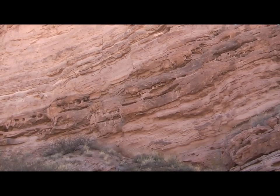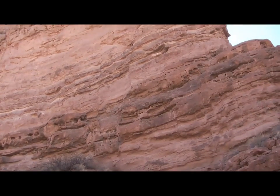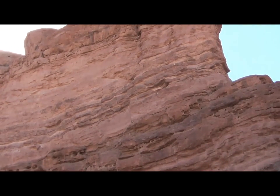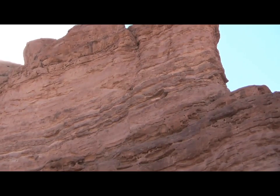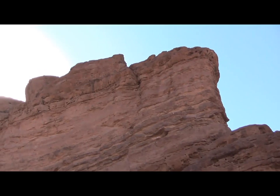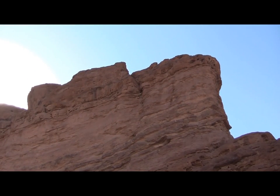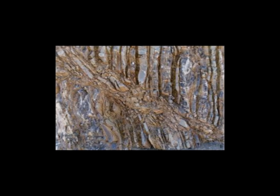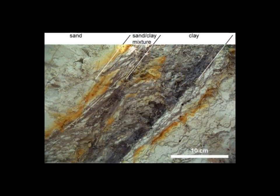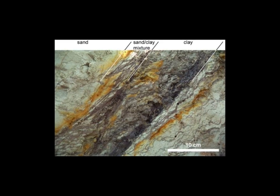Faults are a very important consideration in carbon dioxide storage. They can act to enhance or inhibit our ability to keep sequestered carbon dioxide safely and effectively underground. Fault seal potential depends on juxtaposition, shale gouge ratio, and across-fault pressure difference. Faults that act as structural traps are called fault seals, while faults that act as a migration path or fluid flow are called conduits.